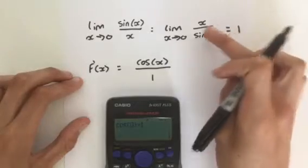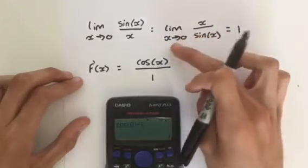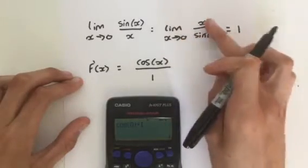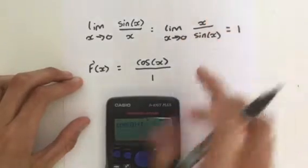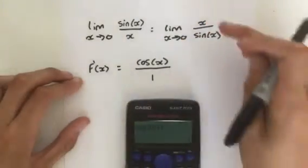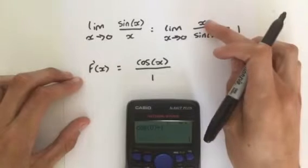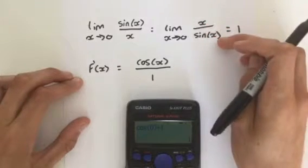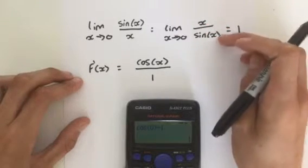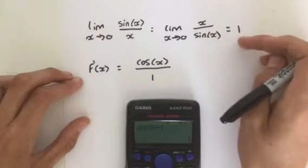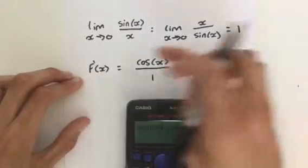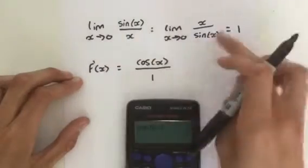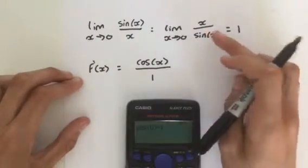The same applies to x over sin(x). If we differentiate x we get 1, and if we differentiate sin(x) we get cos(x), which also equals 1 when we put zero in. So the limit is confirmed as 1.